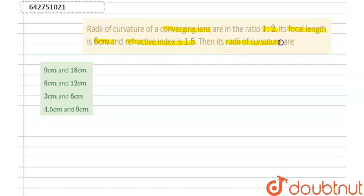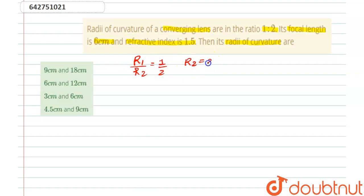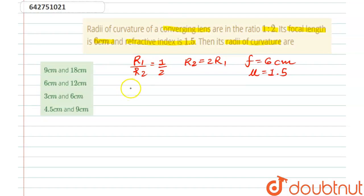We need to find its radii of curvature. We have r1 divided by r2 equal to 1 by 2, so r2 will be 2r1. Focal length f is equal to 6 centimeters and refractive index μ is equal to 1.5. Now, from our lensmaker's formula: